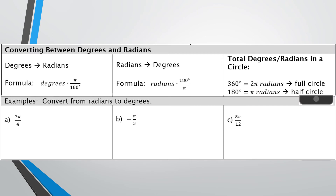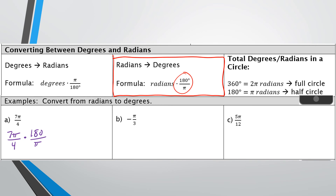Now we're going to go backwards — starting with radians and converting to degrees. We do almost the exact same thing, but instead of multiplying by π/180, we multiply by 180/π. The way to remember it: if you want to get to degrees, you want pi to cancel. So for 7π/4, multiply by 180/π — the pi in the numerator and the pi in the denominator cancel each other out.